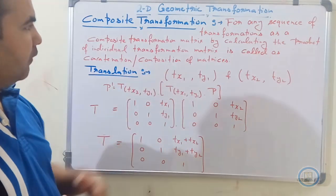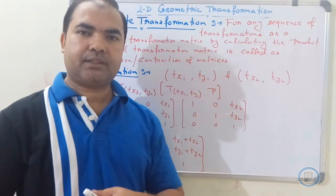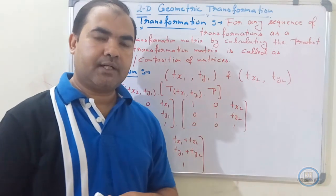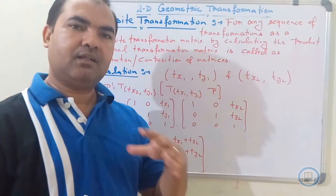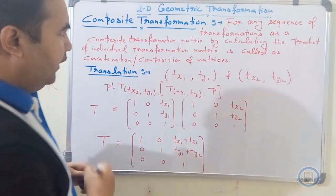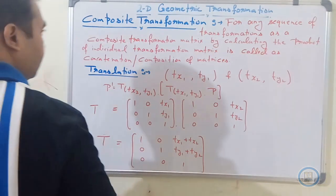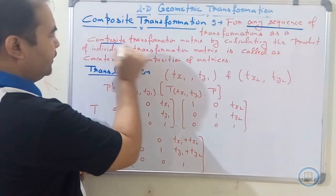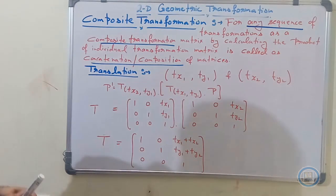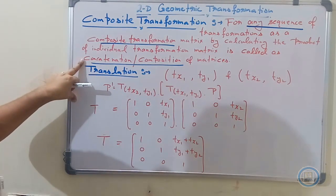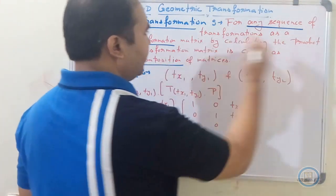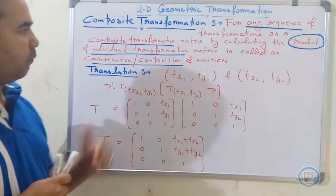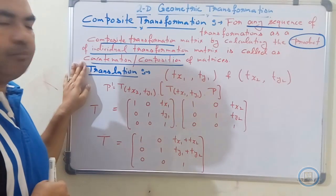For the composite operation, we need homogeneous coordinate values — we cannot apply it directly to Cartesian coordinate values. Any sequence of transformation operations is called composite transformation, and the resulting matrix is called concatenation or composition of matrices. We form this composite matrix with the help of the product of the individual transformation operations.